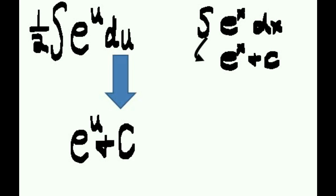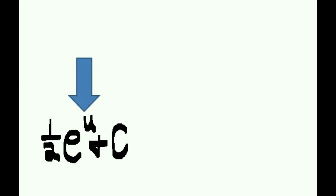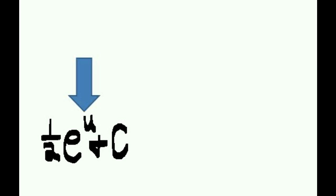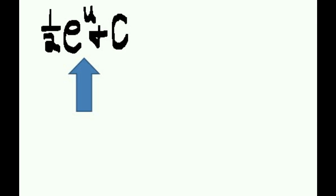Du becomes plus c. We bring down the 1/2 and condense it, clean off the top area, and we move it up. Now we've got to replace that u with its original value—very easy to forget that—which was 2x. And we're done.